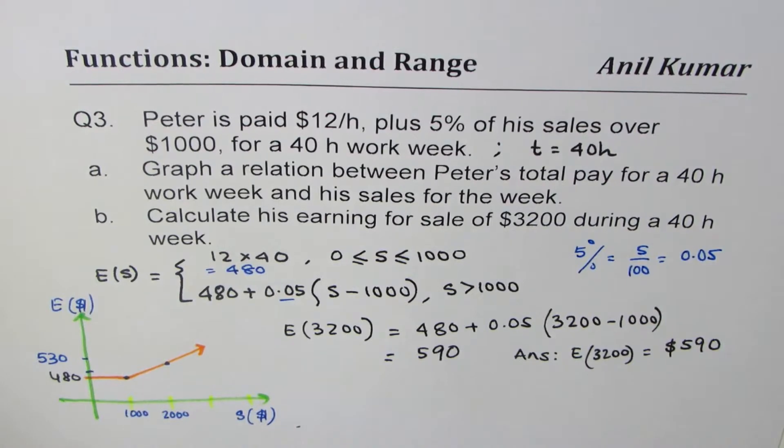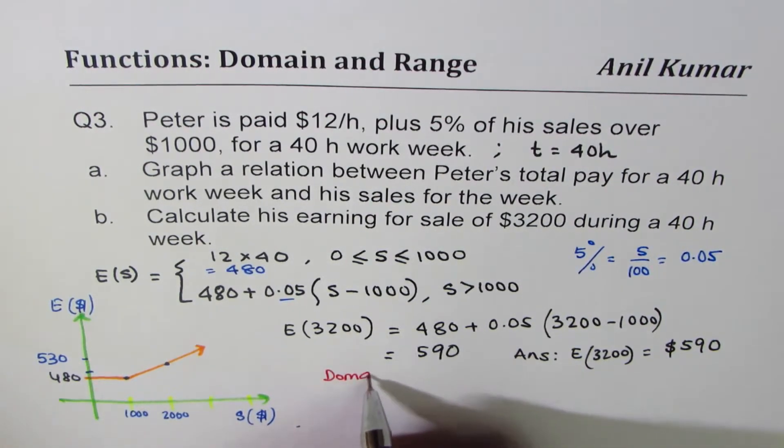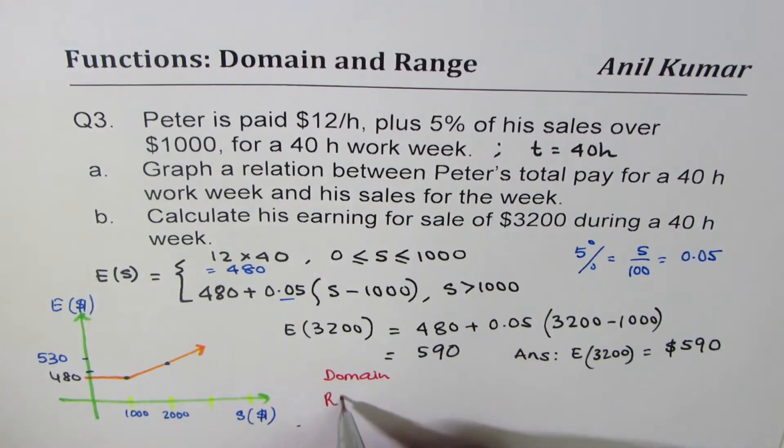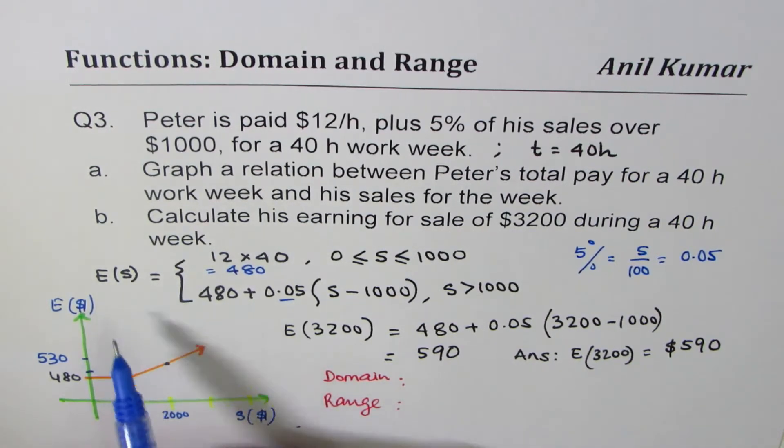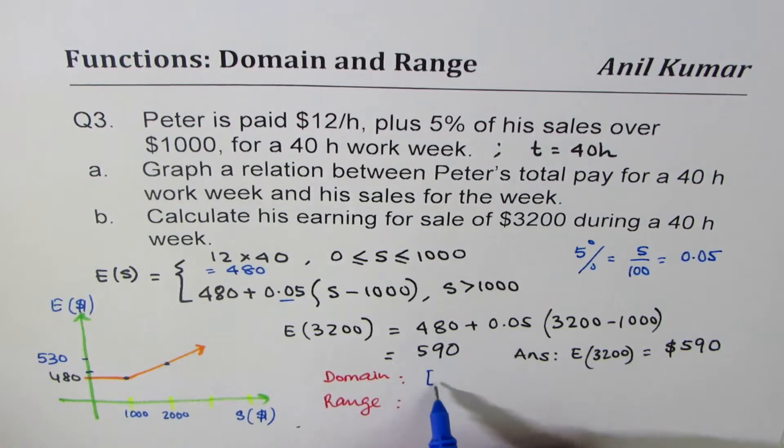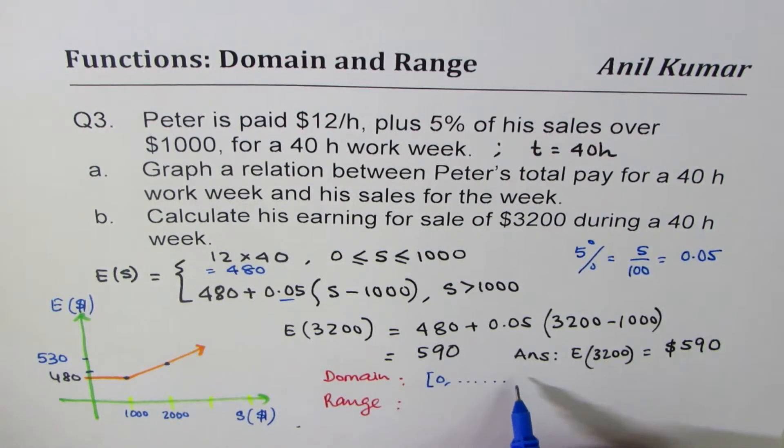Now the question for you is to write domain and range for this function. Domain, you can see, sales. So we can say sales is from 0 to, now this is a very difficult figure to get.